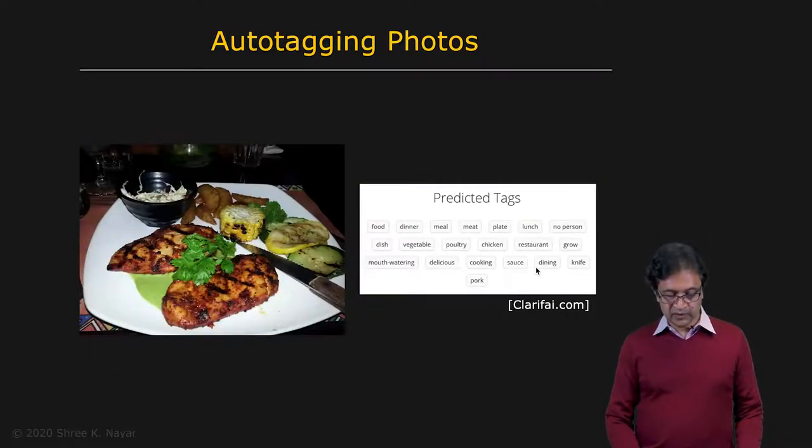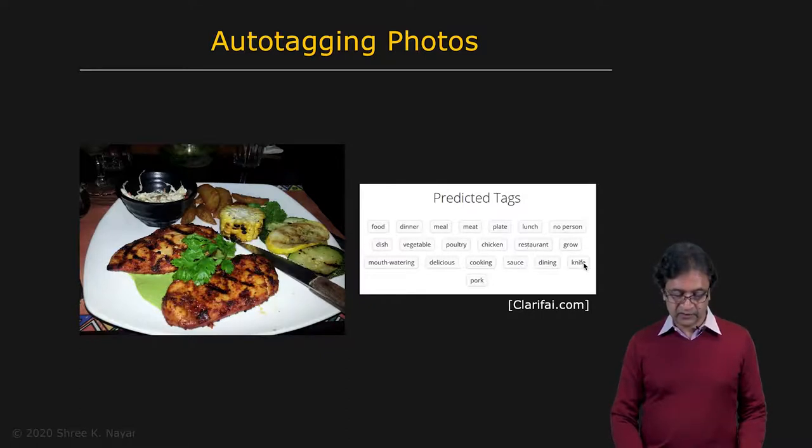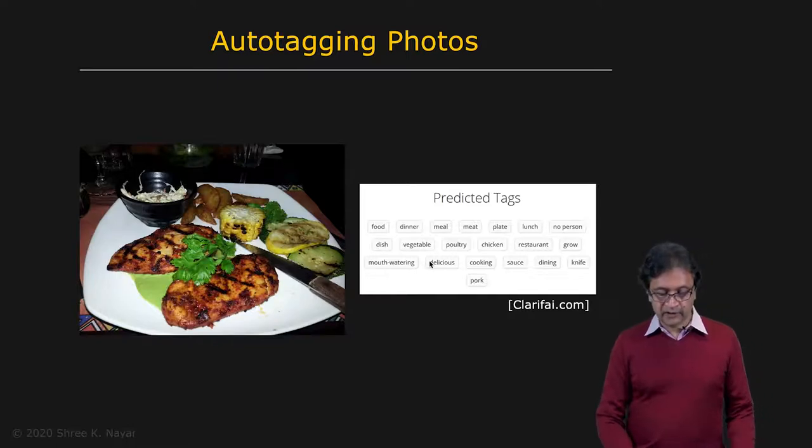Even more remarkable is this one here, which says it's food, it's dinner. It says there's chicken there. That's quite remarkable because this could be something else. It says there are vegetables, mouthwatering, some sauce. I guess that's this right here. And then there's a knife and this is the knife right here. So that's very good.